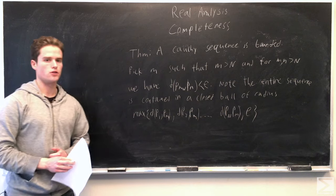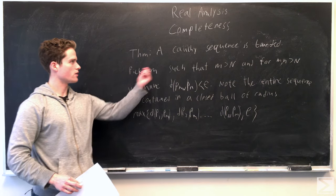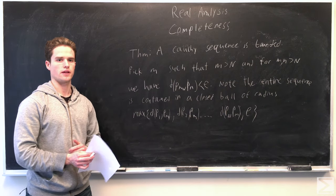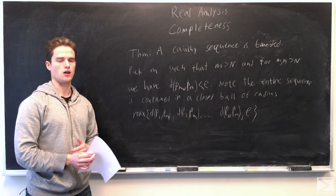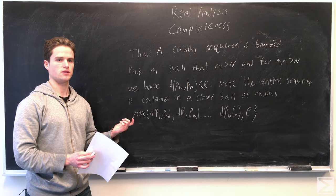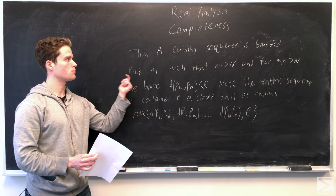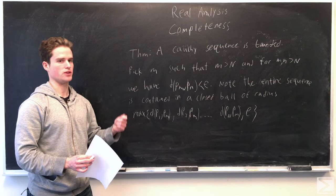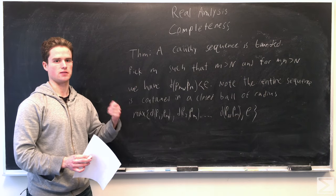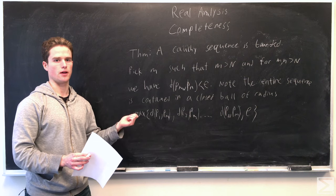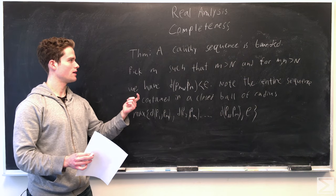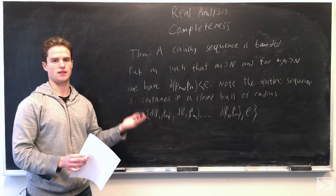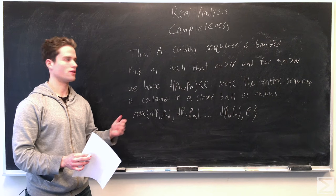To prove our sequence is bounded, we just want to prove that there is some open or closed ball that contains all the points in the sequence. So the distance from these points to some other point is bounded — that's a real number that has some upper bound.